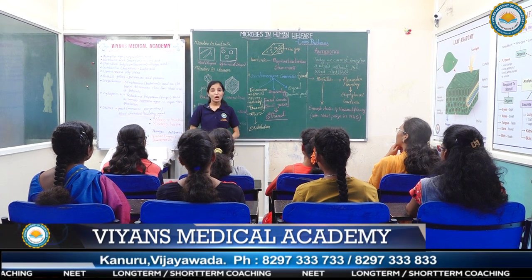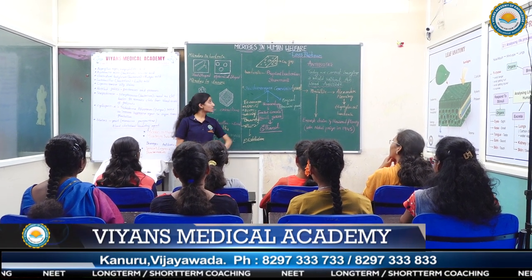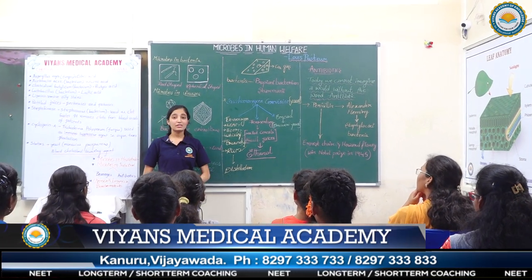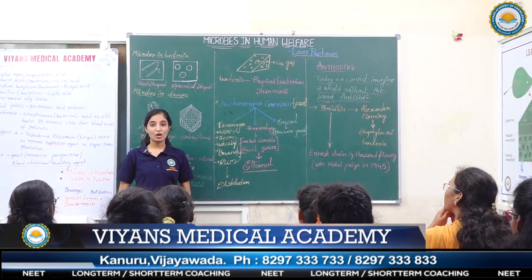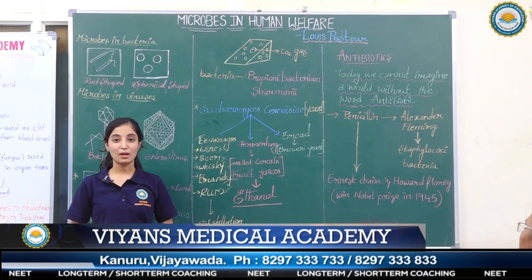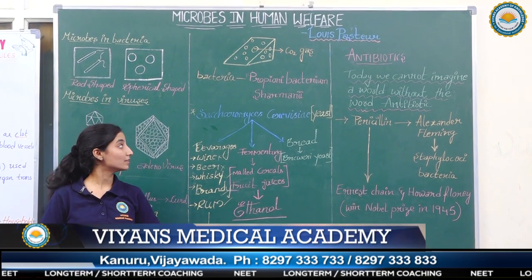We all like cheese. Have you ever wondered why cheese possesses large holes? This is due to the production of CO2 gas by the bacterium Propionibacterium sharmanii.